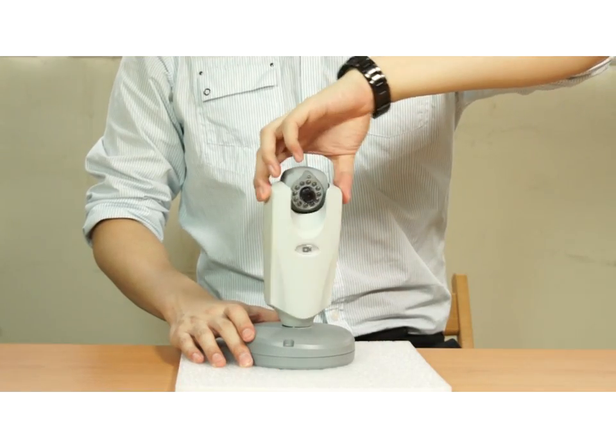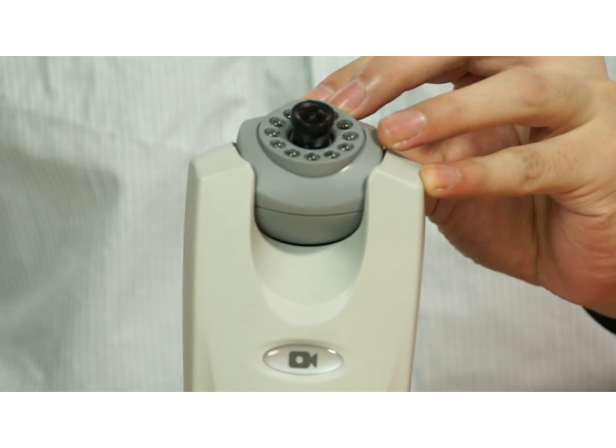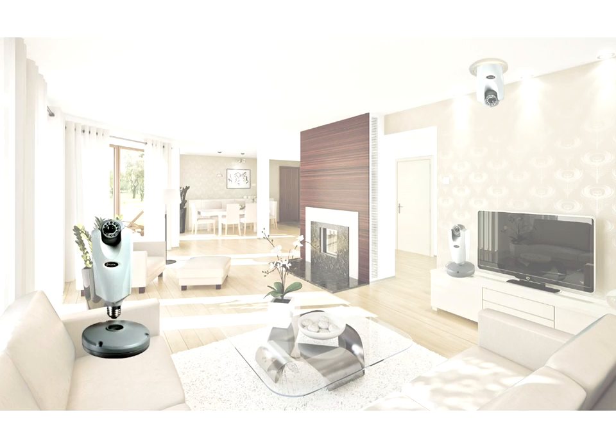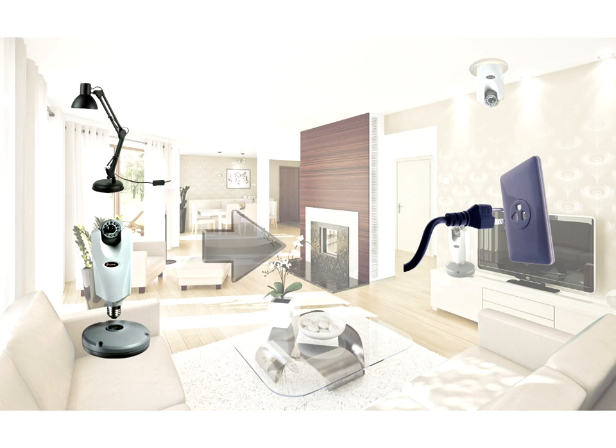The camera body can be adjusted horizontally or vertically for suitable angle. Use the power cable included in the package if the product base is deployed. Turn on the power switch after the IP camera is installed in the household light socket.